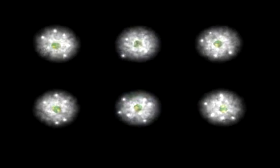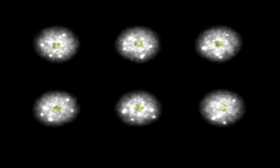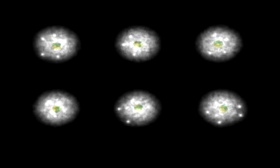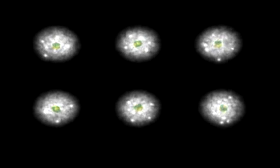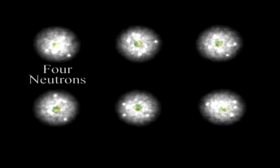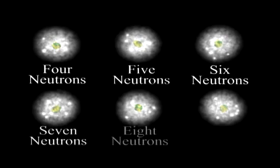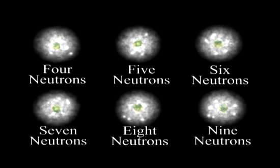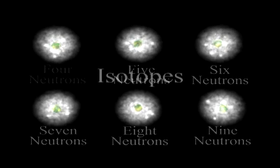While every atom of a given element has the same number of protons, the number of neutrons contained in the nucleus of atoms of the same element can vary. For example, carbon atoms can have four, five, six, seven, eight, or nine neutrons. Each of these different forms of carbon is referred to as an isotope.